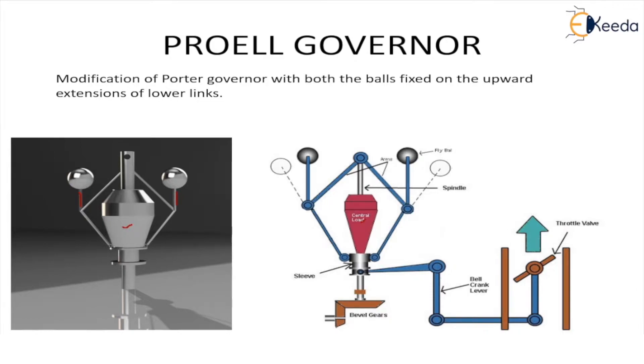When we see the construction of Proell Governors, the spindle is connected to the engine and the rotation speed increases or decreases depending upon the speed of the engine which is dependent upon the load conditions. Now working is, whenever load decreases, speed increases. So arms along with the central load rise up and the fly balls move outward.